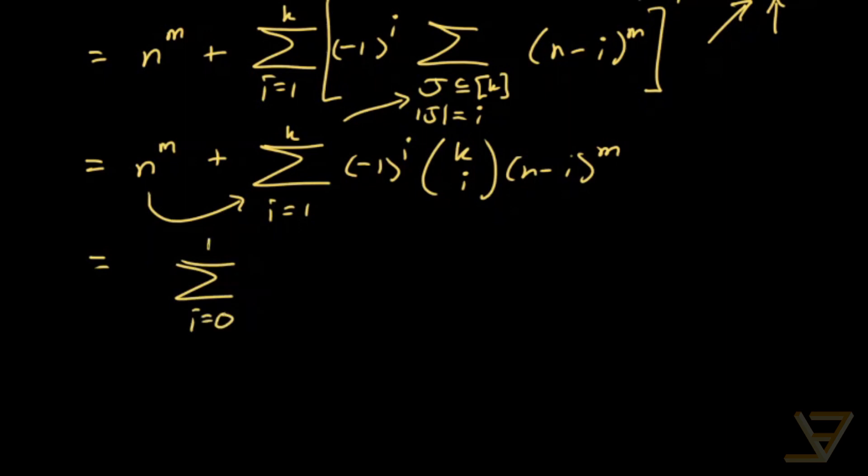We just absorb this term into the sum as a zeroth term. And that gives us the sum from i equals to 0 instead of just 1 of negative 1 to the i, k choose i, n minus i to the m. And you can test that the zeroth term is actually this term over here.